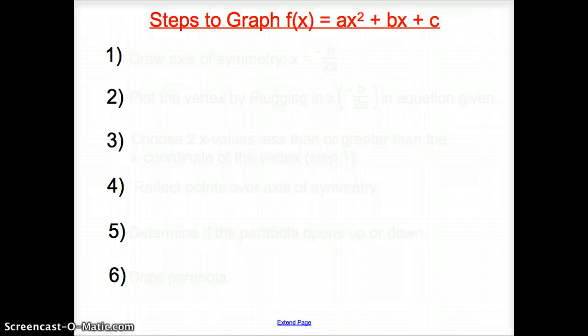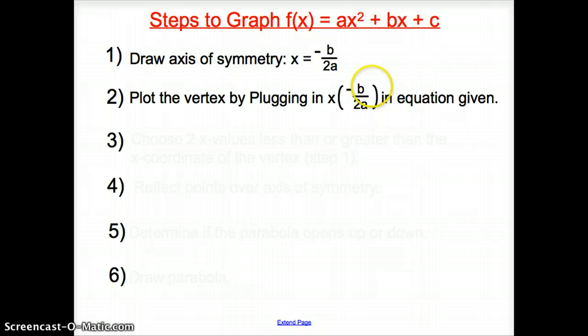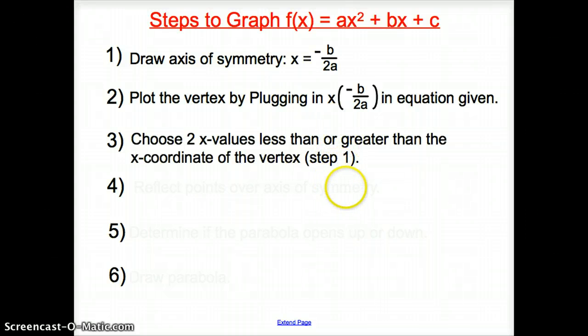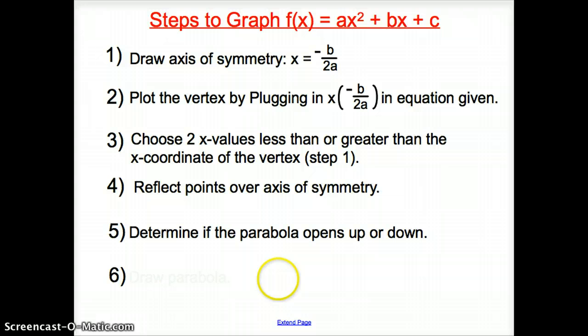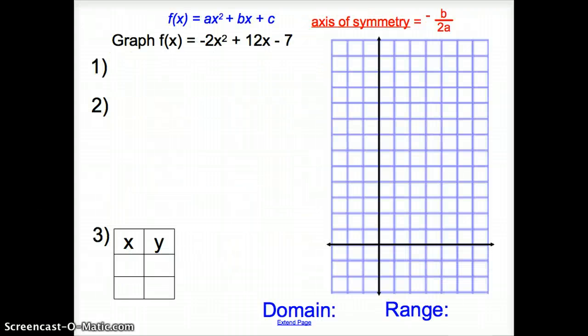Now, when we graph quadratic functions, they follow a specific process. So, if you stick with these steps, you will be absolutely, completely fine. So, stick with these steps that we're going to cover. They're huge. First thing we did, we drew the axis of symmetry, which is opposite b over 2a. The next thing we had to do was plot the vertex by plugging in what you found in step 1. Then, we chose two values, less than or greater than, of the axis of symmetry, which we found in step 1. Then, we reflected those points over the axis of symmetry. We determined if the parabola opened up or down. And then, your favorite part, you drew it. So, now, using these steps, let's try one more.